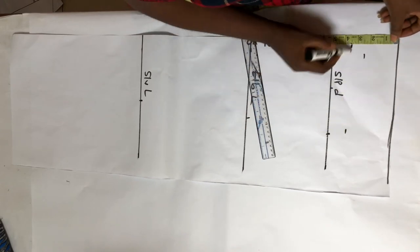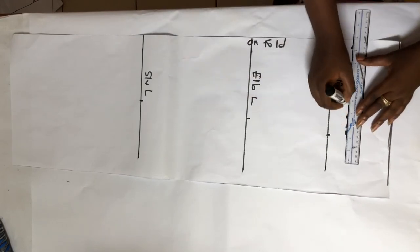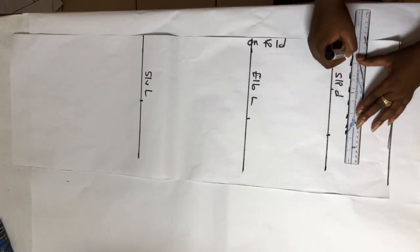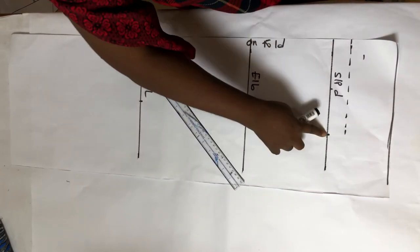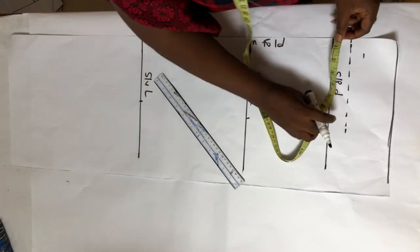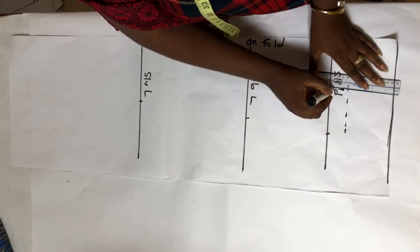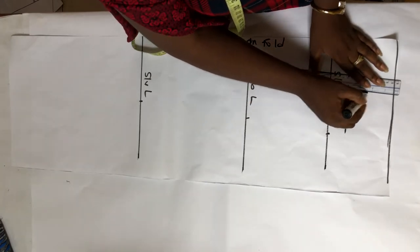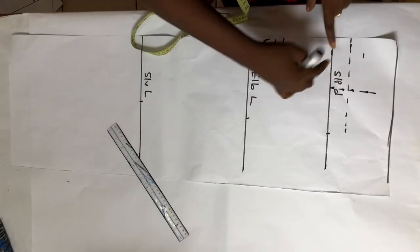This is 3.5. I'm going to draw dotted lines. The midpoint of my 7.5, which is 3.75 which I marked earlier, I'm going to draw a dotted line upwards. What I need is where this dotted line meets this dotted line.